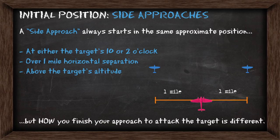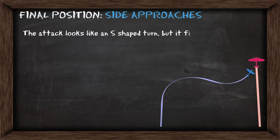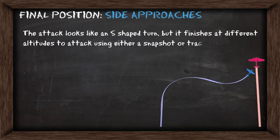The side approach always starts in the same approximate position — at either the target's 10 o'clock or 2 o'clock, with over 1 mile horizontal separation and above the target's altitude. But how you finish the approach to attack the target ends up being different. The attack itself always looks like an S-shaped turn but will finish at different altitudes to attack using either a snapshot or a tracking shot.